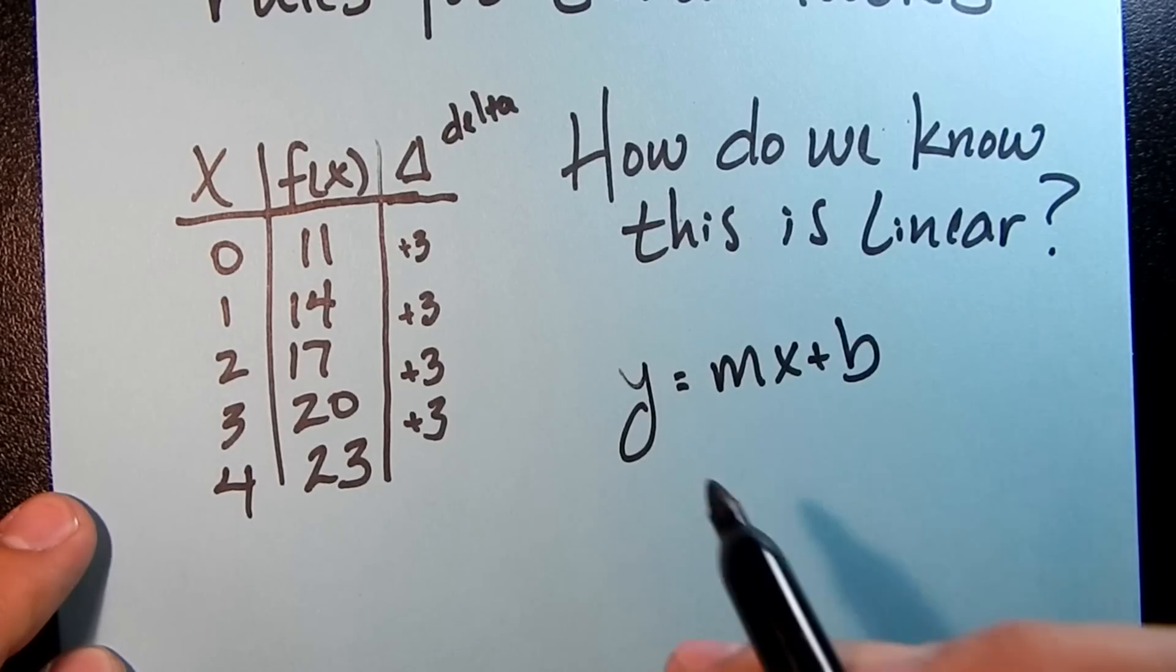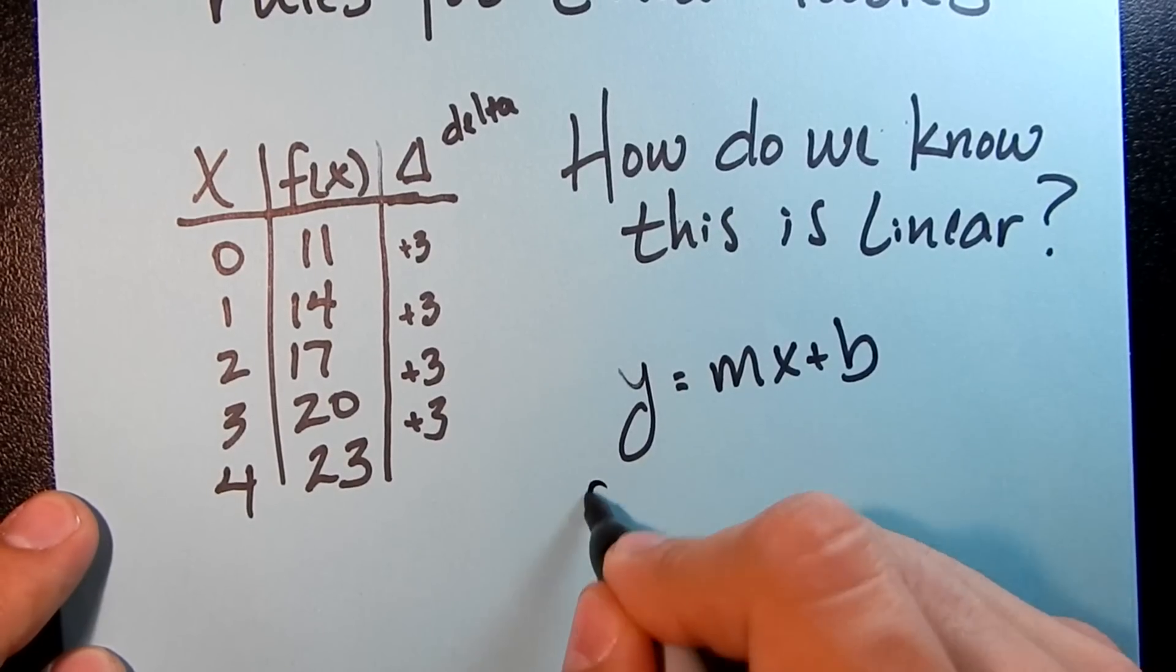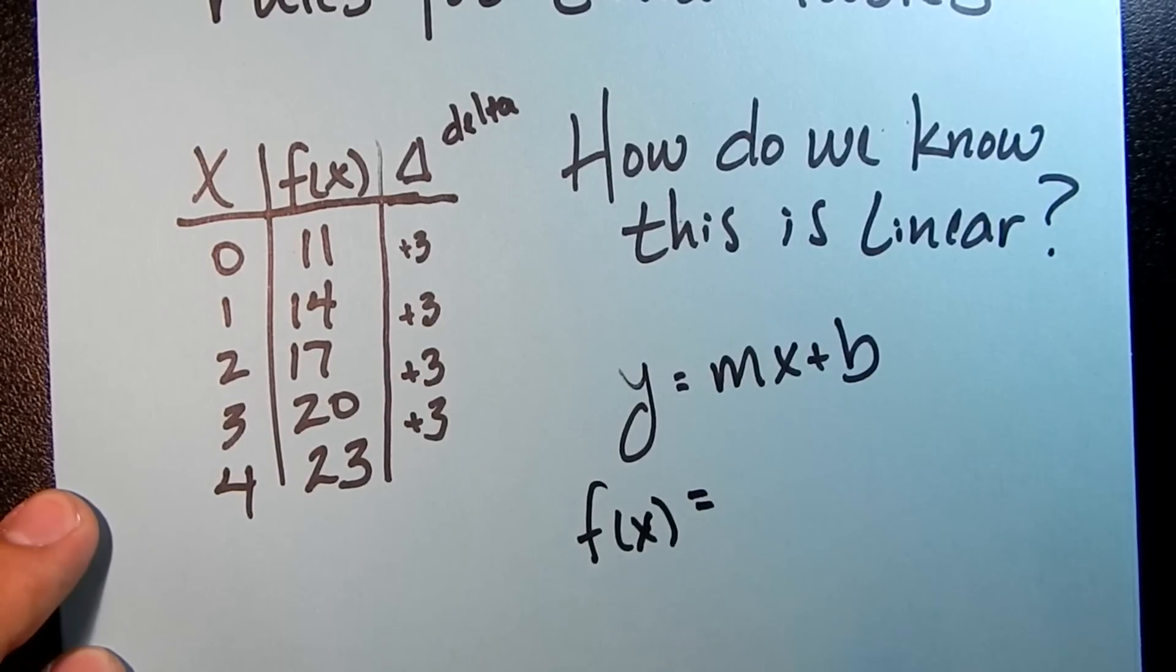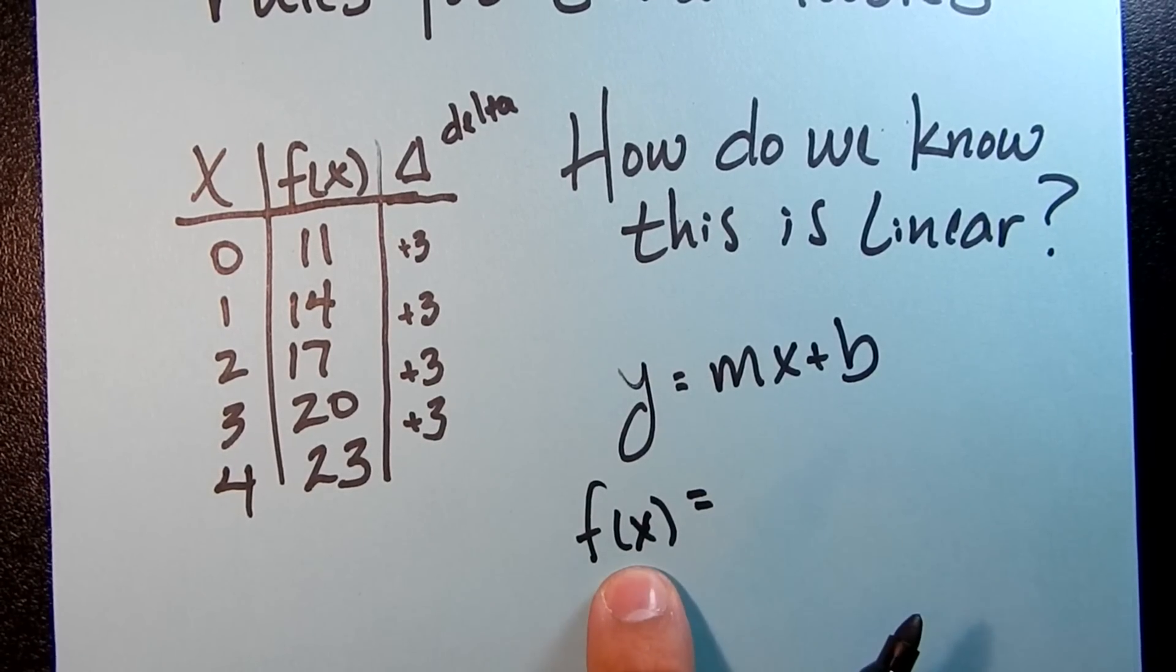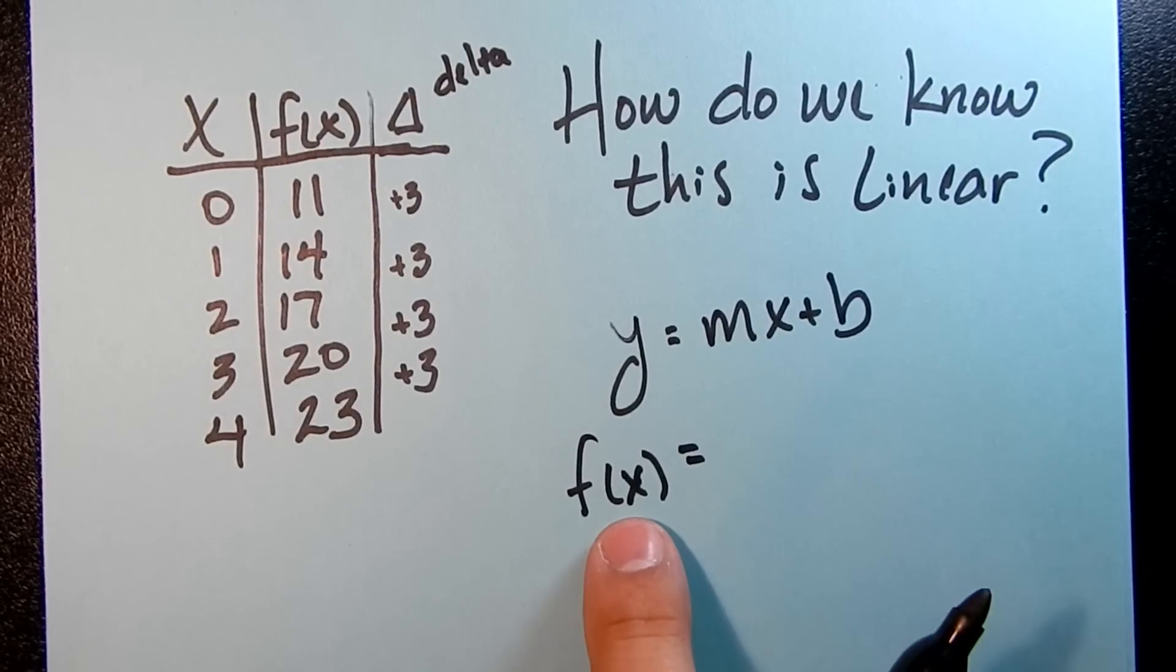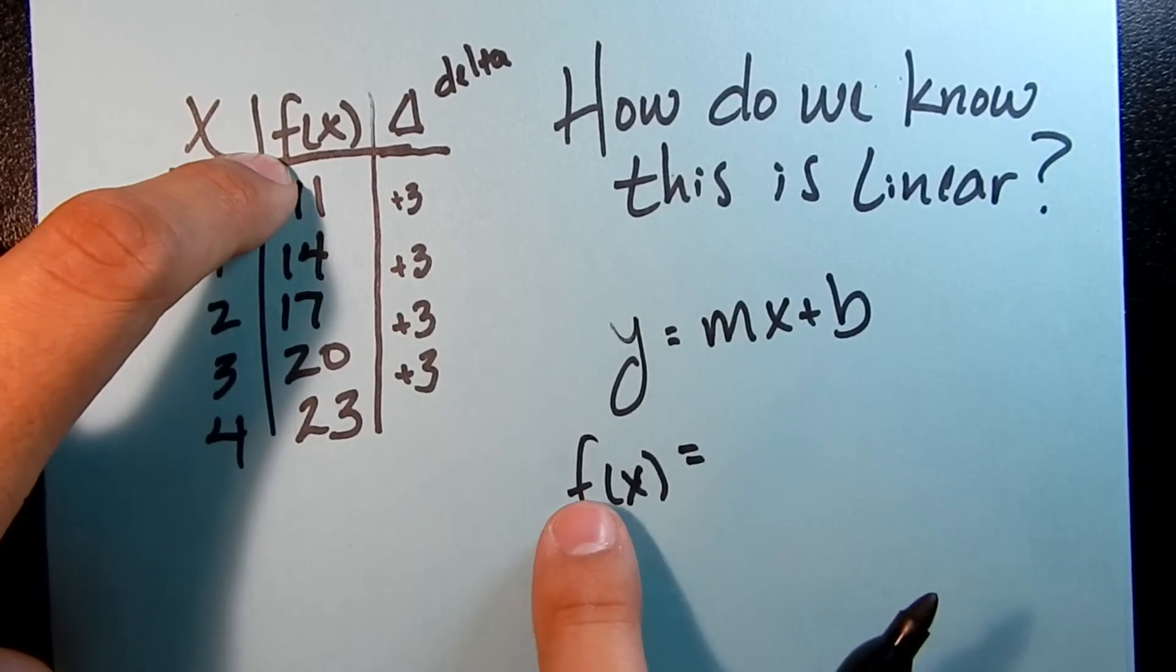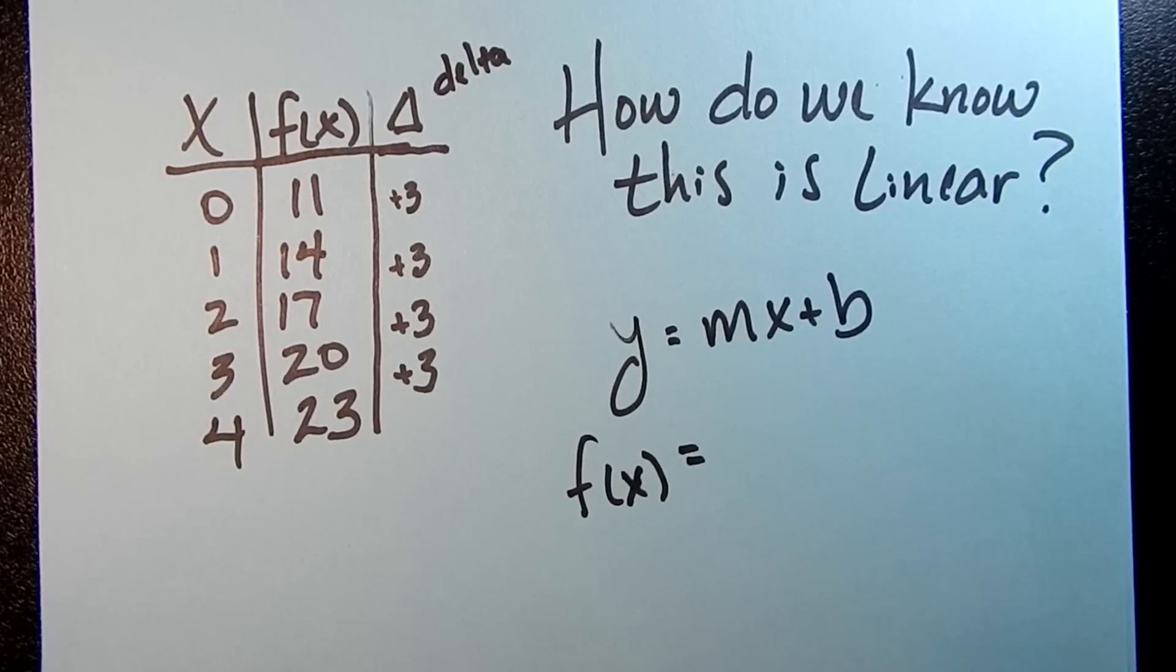So what we're going to do, instead of thinking of this as y, we're going to think of this as f(x). Now, those say the same thing, y and f(x). They mean the same thing, but this is just a different notation. Now, depending on what your function's called, maybe this is g(x) or h(x) or whatever, this is just the name of your function. Ours happens to be f(x). That's usually what functions are.